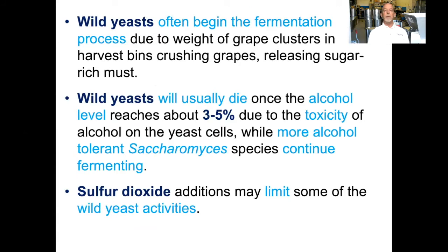Wild yeast often begin the fermentation process due to the weight of grape clusters in the harvest bins crushing the grapes and releasing the rich must. Wild yeast will usually die once the alcohol level reaches about three to five percent due to the toxicity of alcohol on the yeast cells, while more alcohol tolerant Saccharomyces species continue fermenting. Sulfur dioxide additions to the must may also limit some of the wild yeast activities.